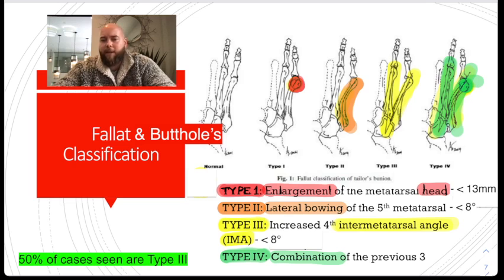The same with type 3, less than 8 degrees also applies. So 8 and 8 is easily remembered there. In type 3, it's the intermetatarsal angle. Less than 8 is normal, and greater than 8 is abnormal.